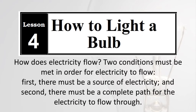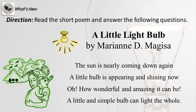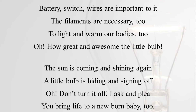Direction: Read the short poem below and answer the following questions. 'A Little Light Bulb' — The sun is nearly coming down again, a little bulb is appearing and shining now. Oh how wonderful and amazing it can be! A little and simple bulb can light the whole room. Battery, switch, wires are important to it; the filaments are necessary to light and warm our bodies too.